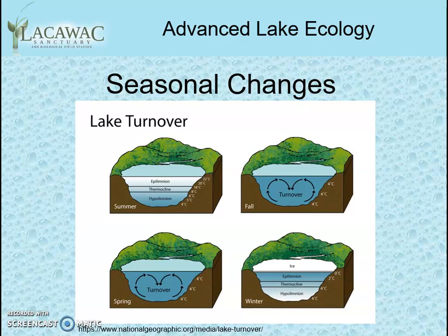Because the seasons change, the epilimnion begins to cool in the fall. Cool water is more dense than warm water, so the cool water begins to sink toward the bottom of the lake. Eventually the entire lake becomes the same temperature, resulting in a fall turnover that redistributes nutrients and oxygen important to life throughout the water.